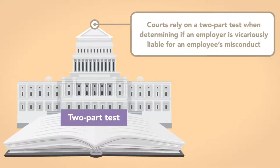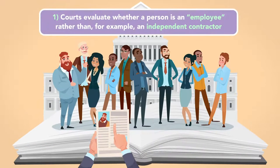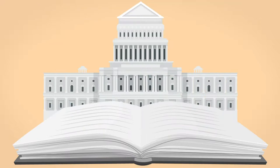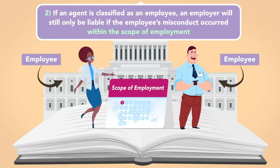Courts rely on a two-part test when determining if an employer is vicariously liable for an employee's misconduct. First, courts evaluate whether a person is an employee rather than, for example, an independent contractor, to which different rules governing liability apply. Second, if an agent is classified as an employee, an employer will still only be liable if the employee's misconduct occurred within the scope of employment.